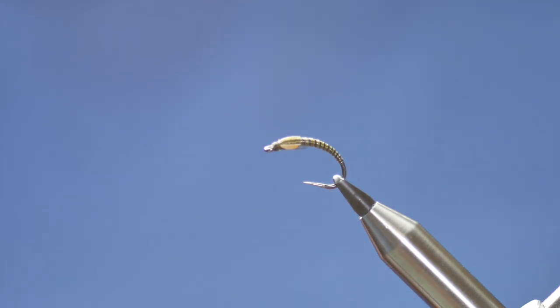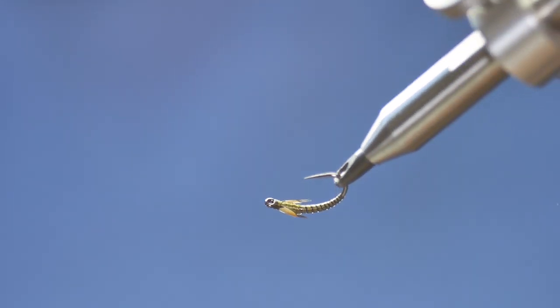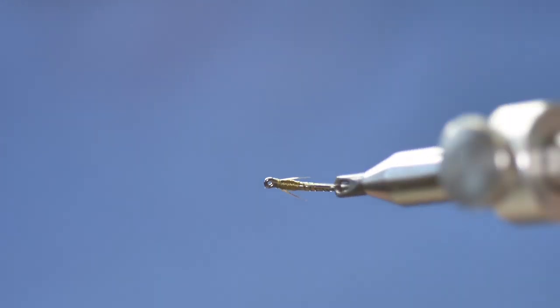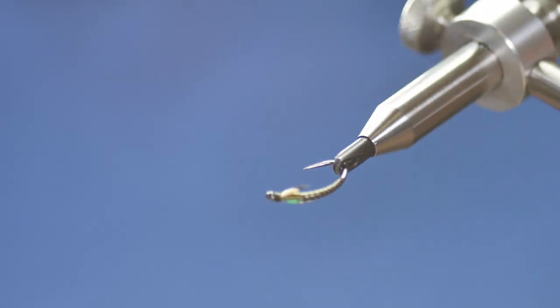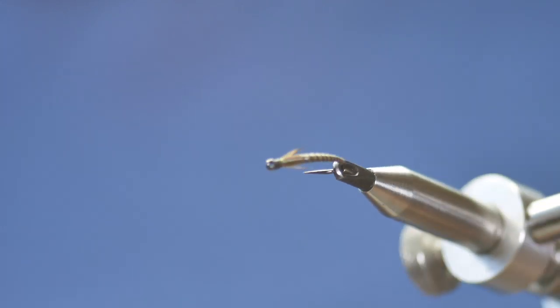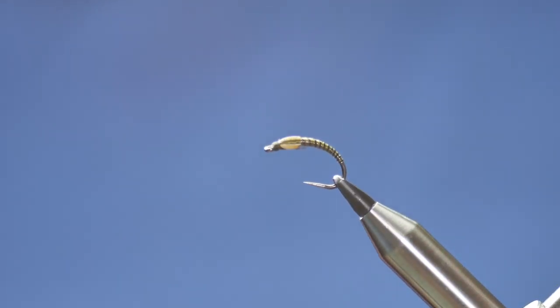If I open my vise up and have a look, you can see that the jungle cock cheeks are sitting nice and flush on both sides. I'm not going to lock my vise off because next we've got to add the tiniest bit of UV resin to the other side of the jungle cock cheek.